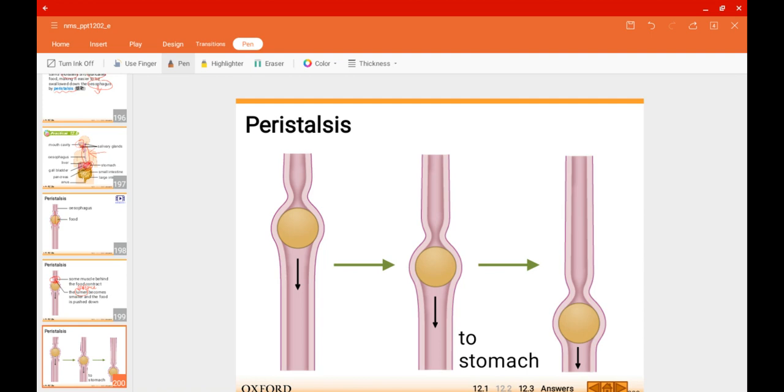Eventually, it's squeezing, it's pushing downwards, and eventually it will go all the way to the stomach. The process of the muscle contracting and the lumen becoming smaller, squeezing the food all the way down to the stomach, is called peristalsis.